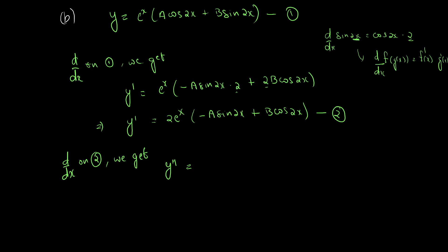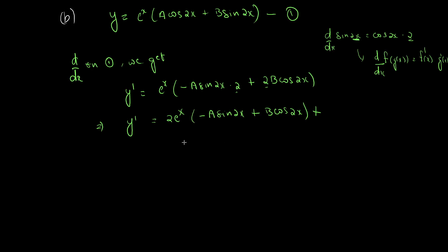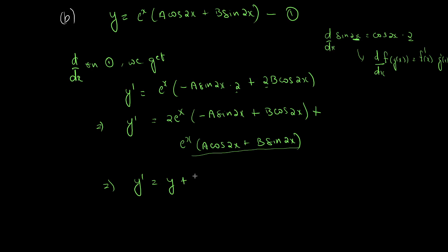Oh sorry, this has a second part — I totally missed that out. So this plus — this is only the first part — plus e raised to x into a cos 2x plus b sin 2x plus b cos 2x. Let this be equation 2.